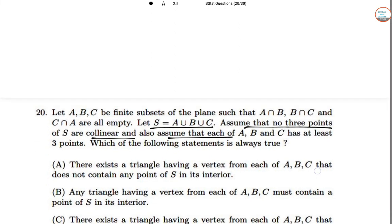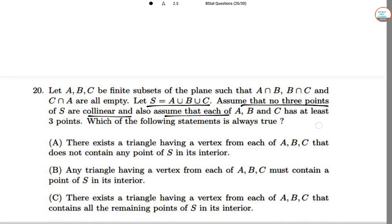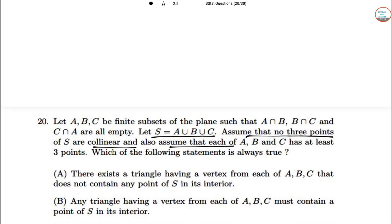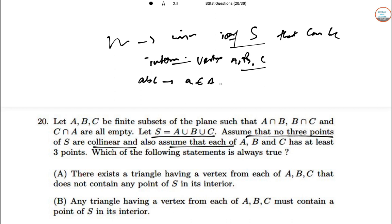There exists a triangle having a vertex from each of A, B, C. This is a theoretical structure, not much math involved. Let N be the minimal number of points in S that can be in the interior of a triangle that has a vertex from each of A, B, and C.